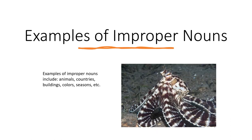All right, so let's do a quick review. Examples of improper nouns would be names that describe animals, countries, buildings, colors, seasons — but we would not know the name of those particular animals, countries, buildings, colors, seasons, etc.